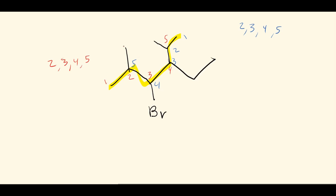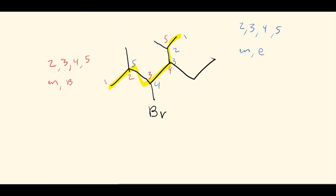When the locant sets are completely tied, we look at the substituents alphabetically. For the red numbering the first substituent is a methyl; for the blue numbering it's also a methyl — still tied. The second substituent in the red numbering is bromo (B); in the blue numbering it's ethyl (E). B comes before E alphabetically, so the red numbering is the correct way to number the chain.